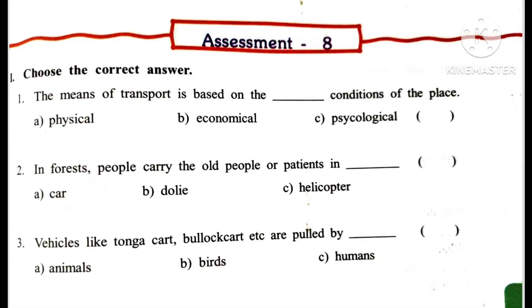Assessment Roman number 1 — Choose the correct answer. 1st question: The means of transport is based on the dash conditions of the place. Answer: Option A — Physical conditions of the place. 2nd question: In forests, people carry old people or patients in dash. Answer: Option B — Dolly. 3rd one: Vehicles like Tonga cart and bullock cart etc. are pulled by dash. Answer: Option C — Humans.